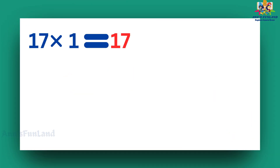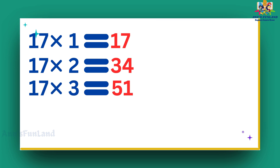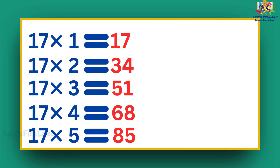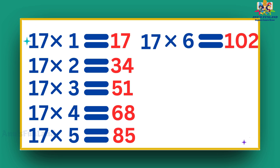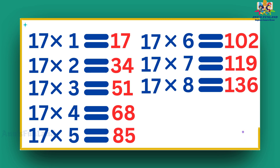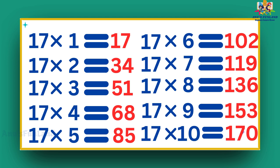17 ones are 17. 17 twos are 34. 17 threes are 51. 17 fours are 68. 17 fives are 85. 17 sixes are 102. 17 sevens are 119. 17 eights are 136. 17 nines are 153. 17 tens are 170.